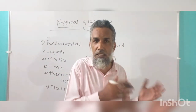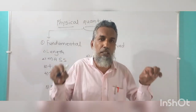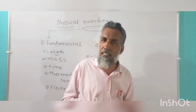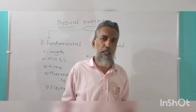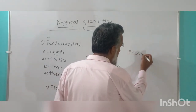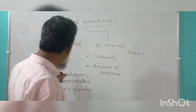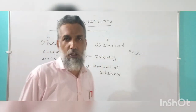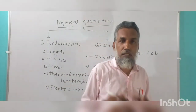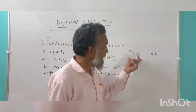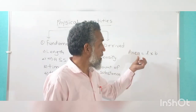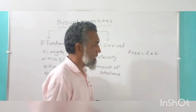If you are using the same fundamental quantity two or more times, the resulting quantity is a derived quantity. If you are using two different fundamental quantities, that quantity is also called a derived quantity. For example, area — in area you are using length, which is a fundamental quantity, but two times: length into breadth. So area is a derived quantity because it uses the fundamental quantity twice. Area is not a fundamental quantity.